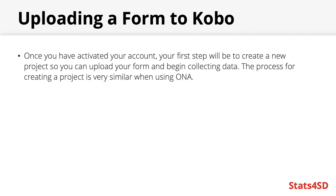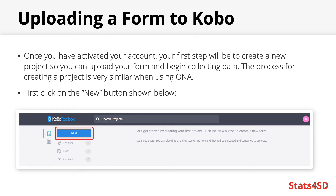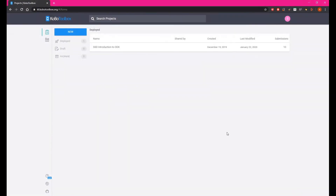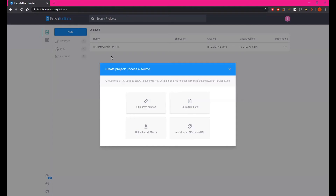Once you have created and activated your own account by replying to the activation email, the first step is to create a new project so that you can upload your form and begin collecting data. The process for creating a project is very similar when using Honor or any other ODK aggregator. You would create a new project by clicking New. When you log on to Kobo, this is its home page. You will see I already have one project here — the SSD Introduction to ODK — which has already been deployed and has 10 submissions.